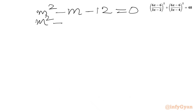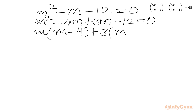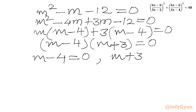We will use the method of factorization. We can write minus m as minus 4m plus 3m. So we get m(m minus 4) plus 3(m minus 4) equal to 0, which gives (m minus 4)(m plus 3) equal to 0. From the zero product rule, either m minus 4 equals 0 or m plus 3 equals 0, so m equals 4 or m equals negative 3.